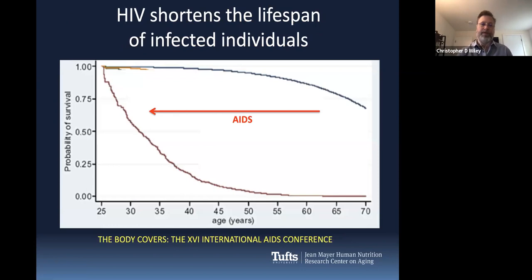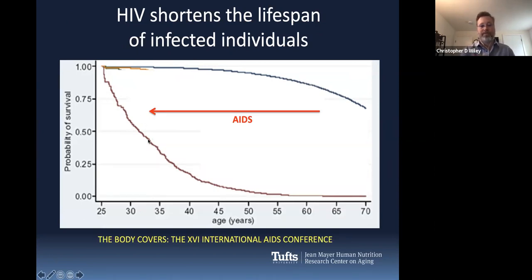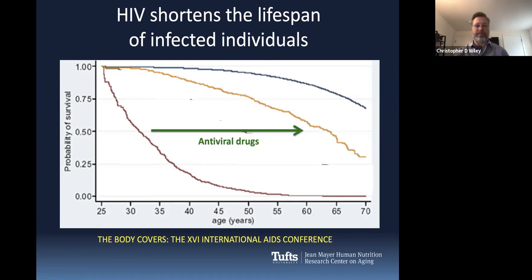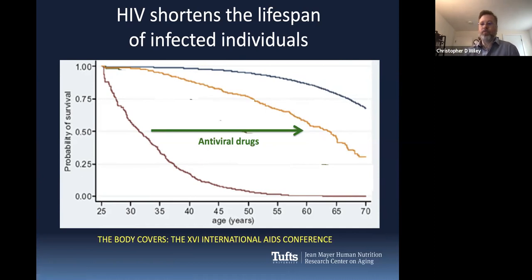A very similar concept came from people who are infected with HIV. HIV is the virus that causes AIDS. If this is the general lifespan of people not infected with HIV, and this is the lifespan of people infected with HIV who do not receive treatment, at some point they develop AIDS and their lifespan is severely decreased. But once diagnosed with HIV, you go on antiviral drugs and those drugs keep you from getting AIDS. Even though they're not getting AIDS anymore, they're still not living as long as uninfected people — about a decade less. When they show up in the clinic, they show up with features that collectively resemble aging.